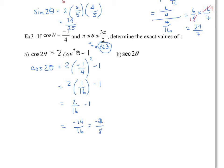For secant of 2 theta, that's simply the reciprocal of cos 2 theta. So all I have to do is flip the fraction. Since cos 2 theta is negative 7 eighths, secant 2 theta is equal to negative 8 sevenths.